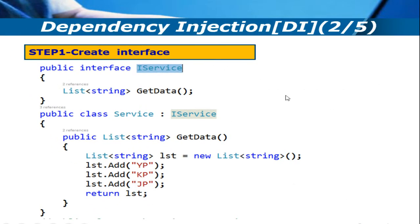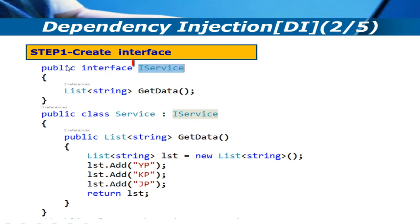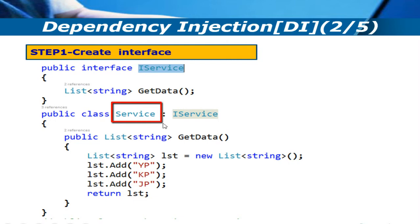Let's see how we can create the abstraction layer using dependency injection. We already saw this low level class — the dependency class — which gives you the list of type string. Here I am creating one interface called iService which has a get data method, and the Service class implements iService.